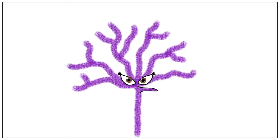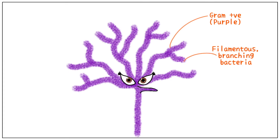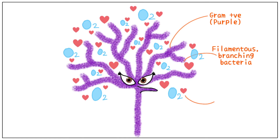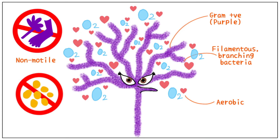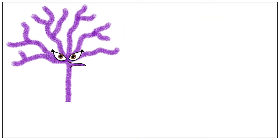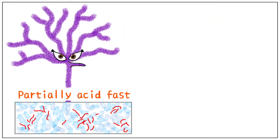Nocardia looks just like Actinomyces. It is gram-positive and a filamentous branching bacteria. The most important point of difference is that Nocardia loves oxygen and is aerobic, while Actinomyces is anaerobic. Like Actinomyces, Nocardia is non-motile and non-sporing. Importantly, Nocardia is a partially acid-fast species, so you can see some red organisms among the blue on ZN staining. It is important to distinguish Nocardia infection from tuberculosis.